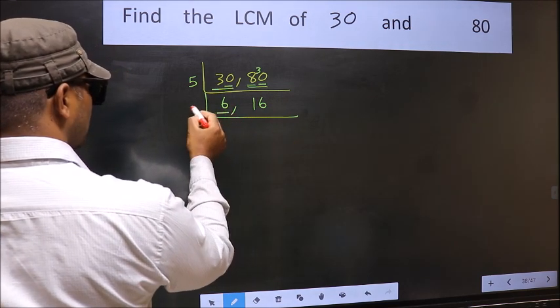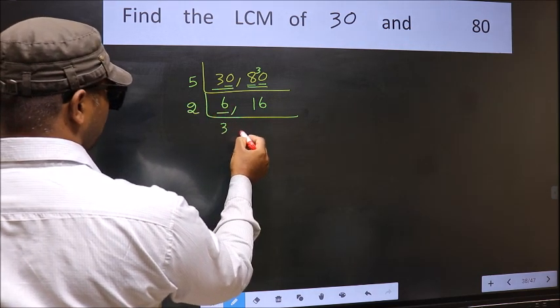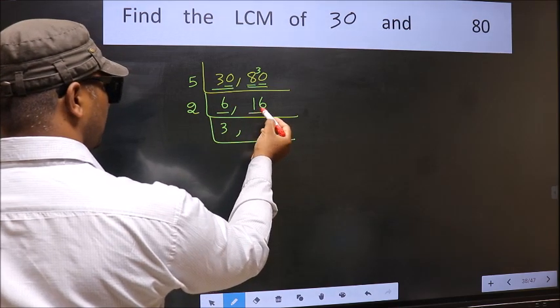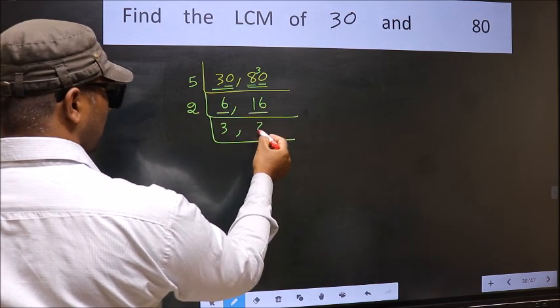Now here we have 6. 6 is 2 times 3 is 6. The other number is 16. When do we get 16 in the 2 table? 2 times 8 is 16.